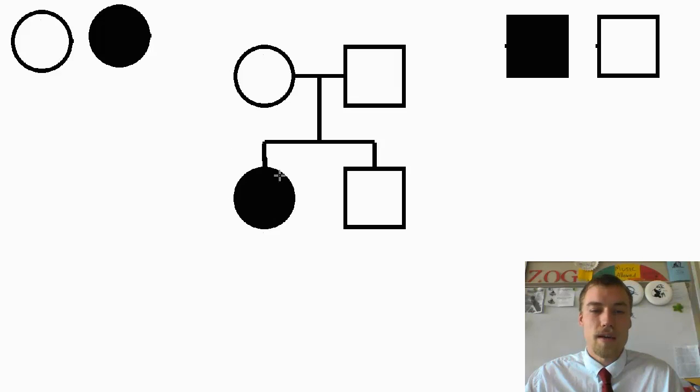The only way that she could have received an X that has a trait and therefore have the disease is if her father has it as well, and he doesn't. If it was a dominant trait, then one of the parents would have also had to have had it, and they do not, so therefore we're left with the idea that this is going to be a recessive trait.